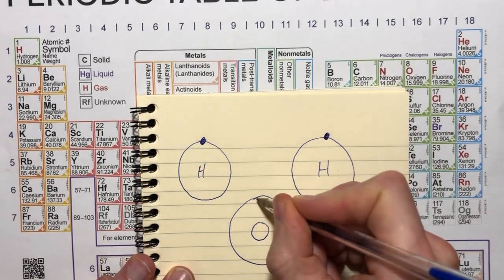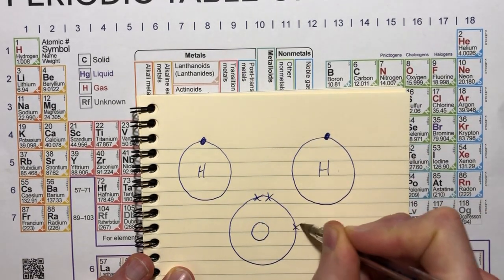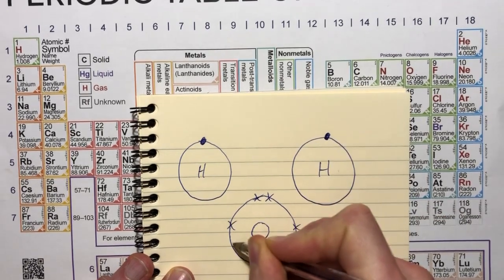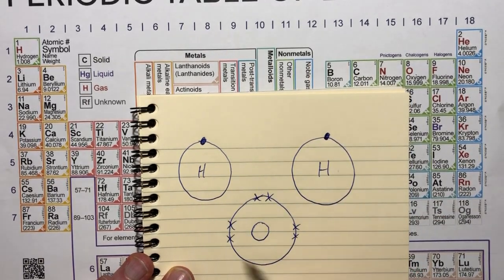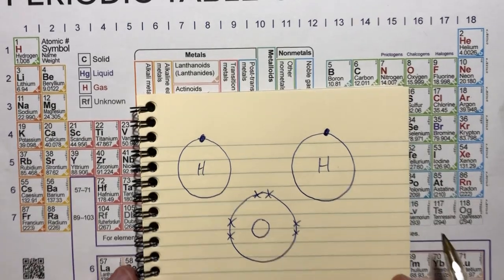I'm only going to draw the outer shell. One, two, three, four, five, six. It doesn't actually matter where you draw them. It's just to make the diagram look nice.